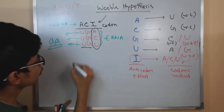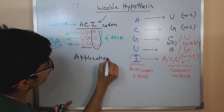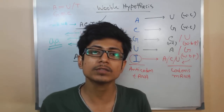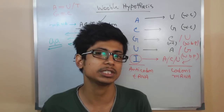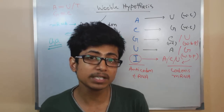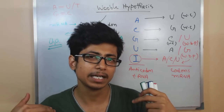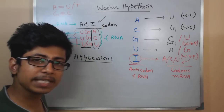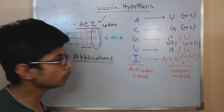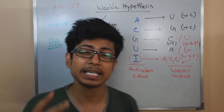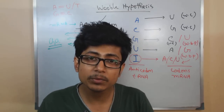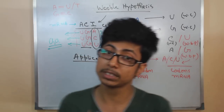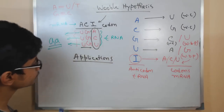That is the beauty of wobble hypothesis. Its applications include unknown DNA sequencing and PCR primer designing for any unknown gene. When designing a primer for PCR, we must know the upstream and downstream sequence of the target gene. For unknown genes, we can place hypoxanthine (inosine) at the third position of the primer to allow binding with three different base possibilities, increasing the probability of the primer binding to the correct DNA region.